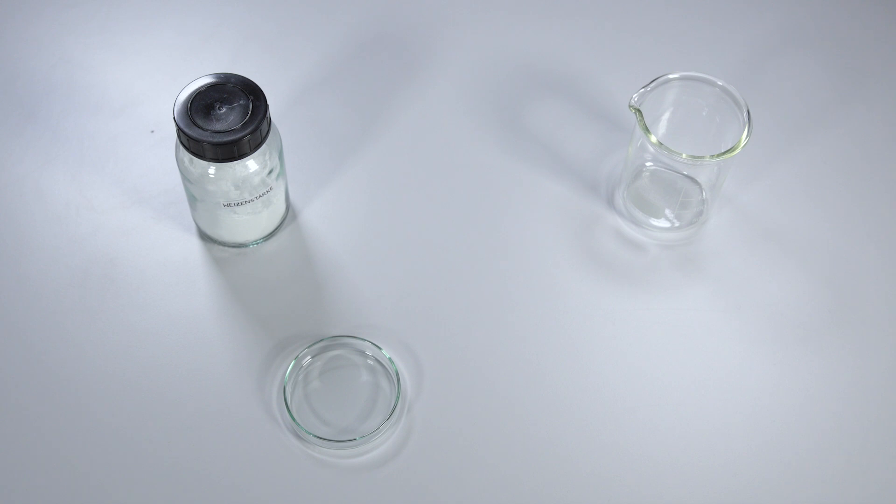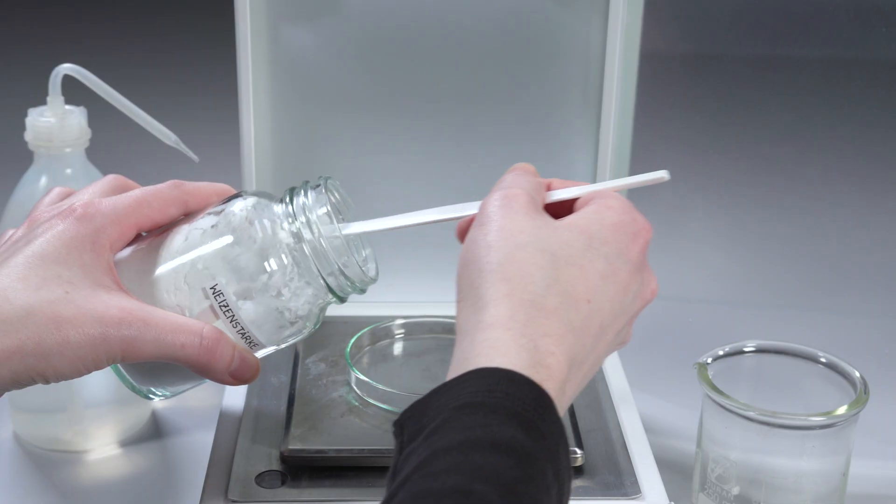To prepare the paste, the following supplies are needed: wheat starch powder, a container for weighing, a beaker, demineralized water, a spoon or spatula, and a stick for stirring the paste. In this video, we will be preparing a 10% starch suspension for each example.